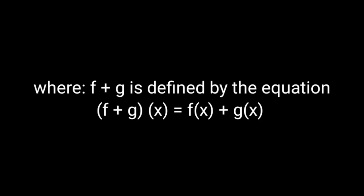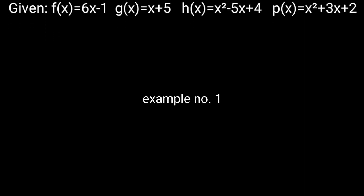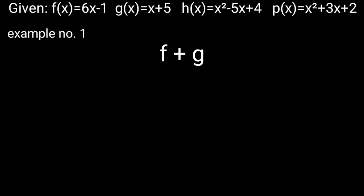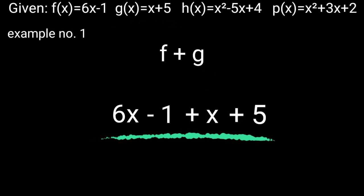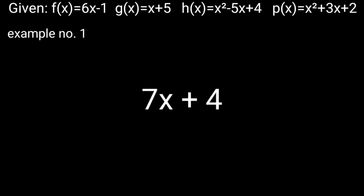The sum f plus g is defined by the equation (f + g)(x) = f(x) + g(x). Given f(x) = 6x − 1, g(x) = x + 5, h(x) = x² − 5x + 4, and p(x) = x² + 3x + 2. Example 1: f + g — substitute f with 6x − 1 and g with x + 5, giving 6x − 1 + x + 5. Combine like terms: 6x + x + 5 − 1, and the final answer is 7x + 4.